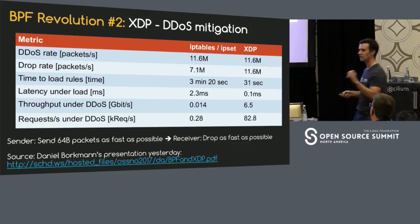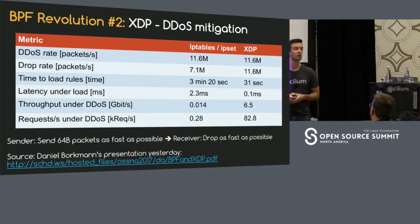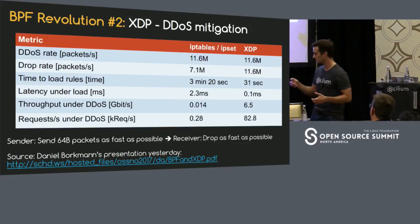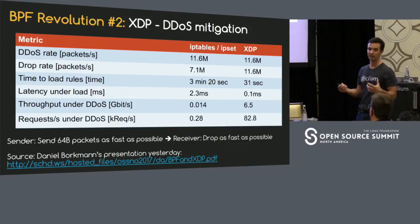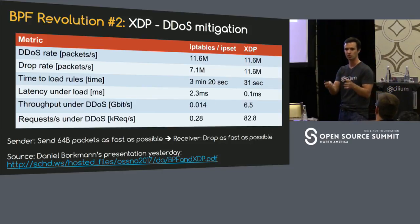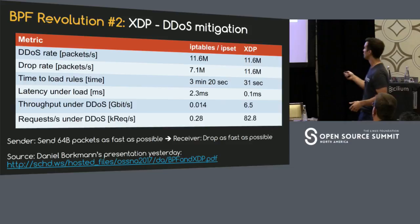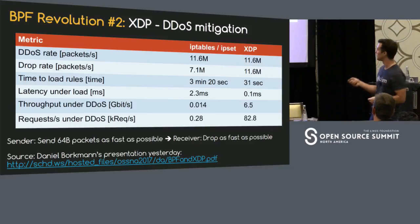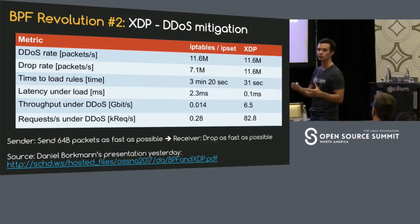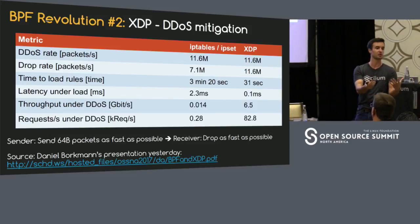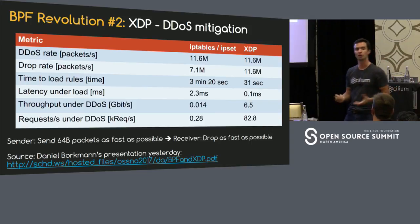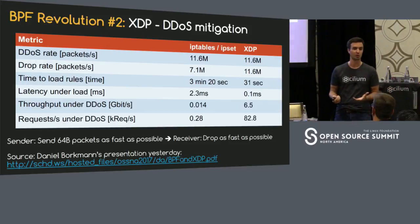The sender is able to generate 11.6 million packets per second. If you're using IP set, we can only drop 7.1 million packets per second — so all the resources on the machine are not enough to even drop all of these packets. With XDP, we can easily drop all of them. If we load the rules — these 16 million rules — while generating traffic, with IP tables and IP set this took over three minutes. With XDP, we were down to 31 seconds.